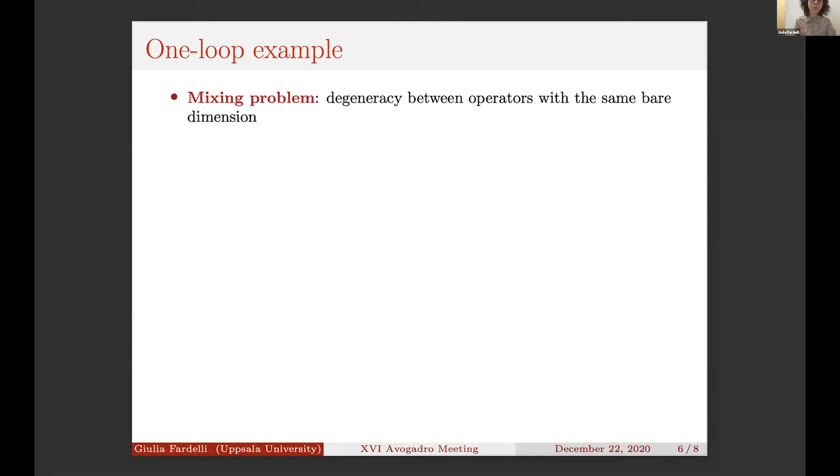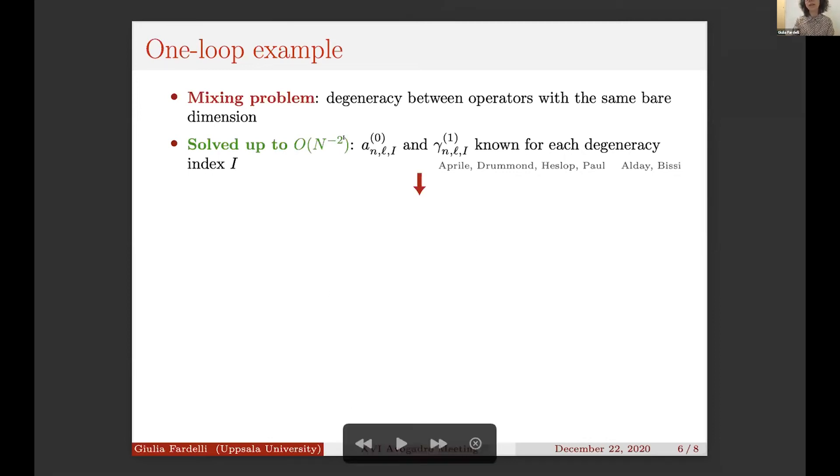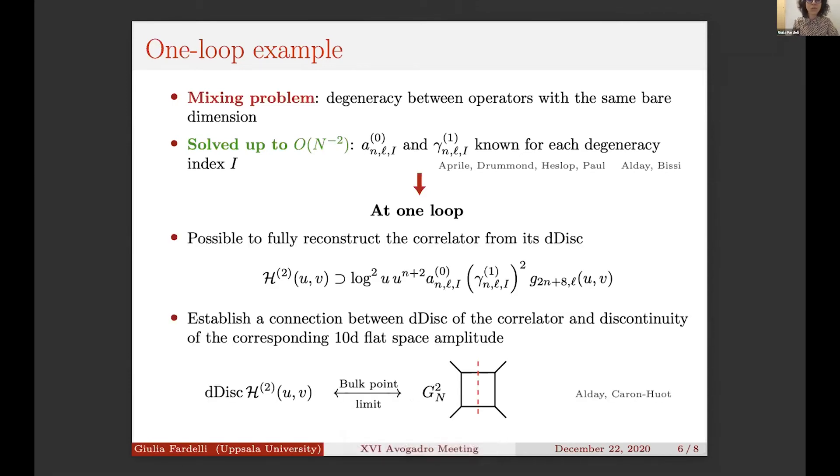Fortunately, this problem has been solved up to order N^{-2}, and in particular we exactly know an expression for a_0 and anomalous dimension γ_1 for each degenerate index i. The knowledge of these two coefficients was super successful at one loop because, from one side, it allows to fully reconstruct the correlator from its double discontinuity, since the only non-vanishing term in H_2—which is the correlator at order N^{-4}—is this log squared, which as you can see depends only on a_0 and γ_1.